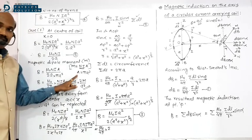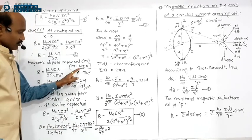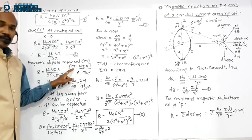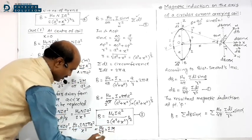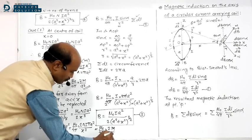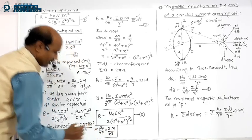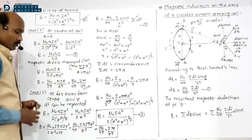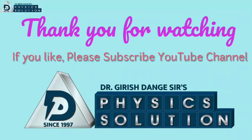In terms of magnetic dipole moment M = NIA = NI πa², multiplying and dividing by π, we get: B = (μ₀/4π) × (2M / x³). So this is the formula for magnetic induction at a far axial point in terms of the magnetic dipole moment.